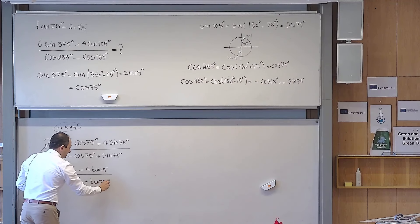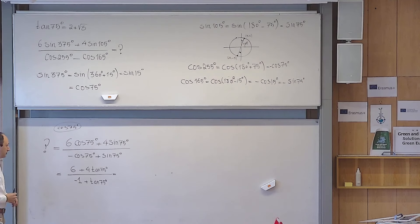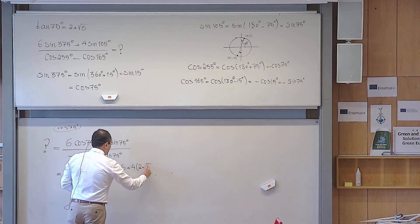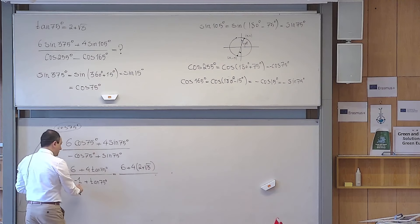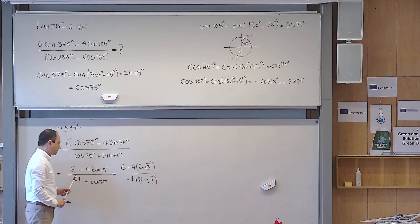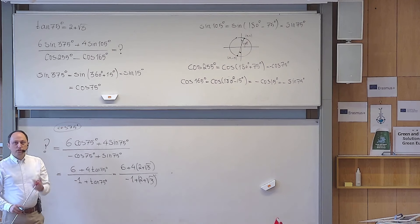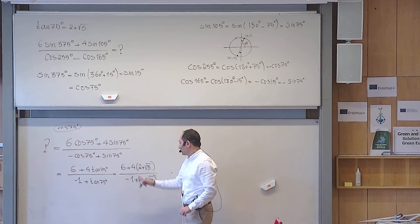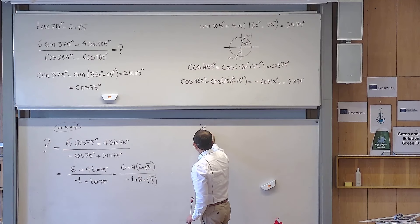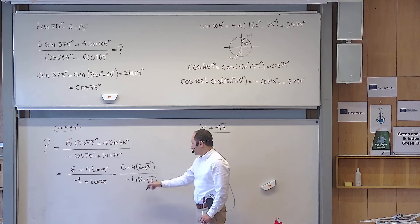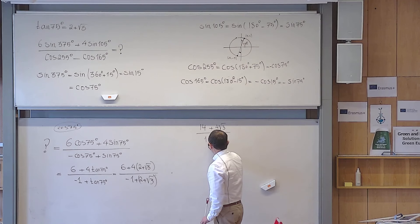Now it is just numerical calculation. Substituting tangent 75 = 2 + √3: the expression becomes 6 plus 4 times (2 plus square root of 3), all over minus 1 plus (2 plus square root of 3). Simplifying: the numerator gives 6 plus 8 plus 4 square root of 3, which is 14 plus 4 square root of 3. The denominator gives minus 1 plus 2 plus square root of 3, which is 1 plus square root of 3.